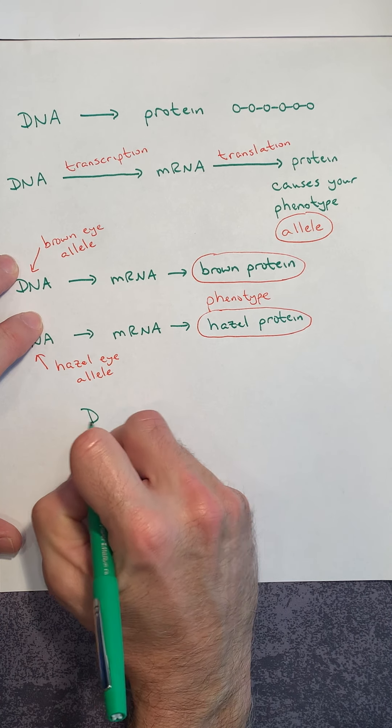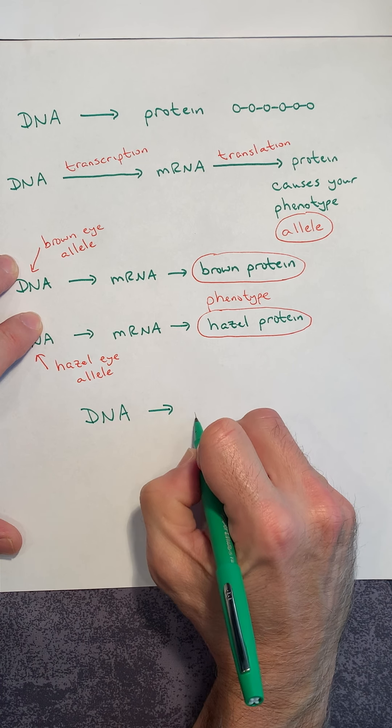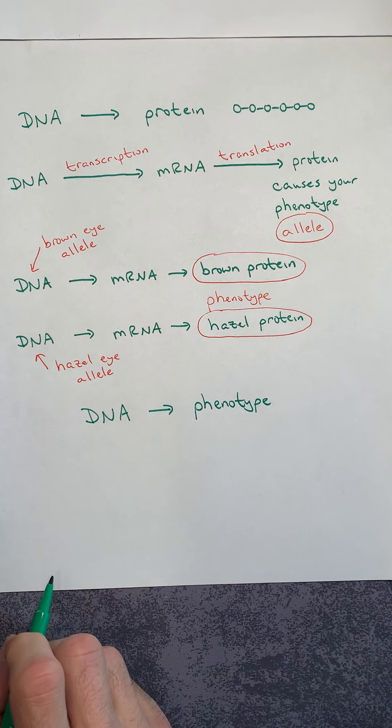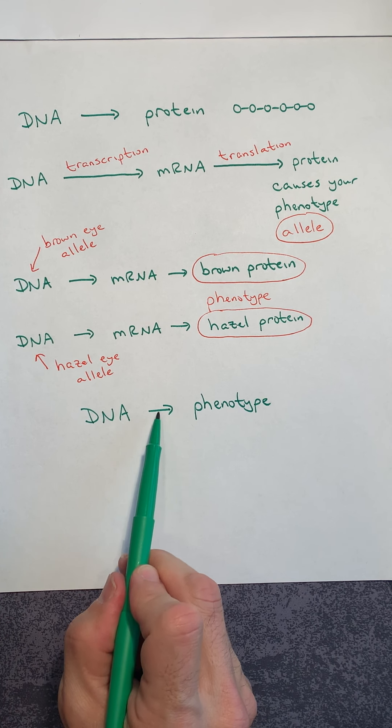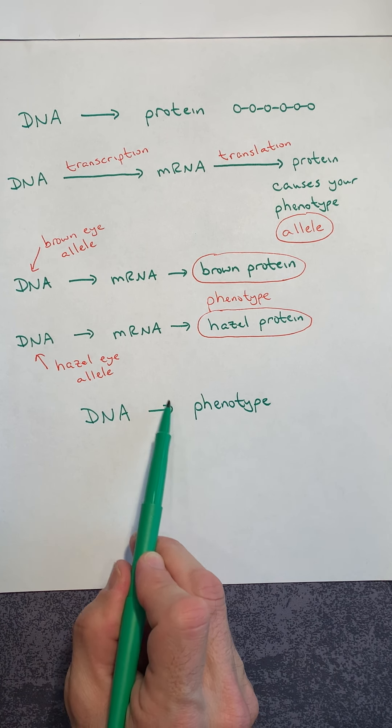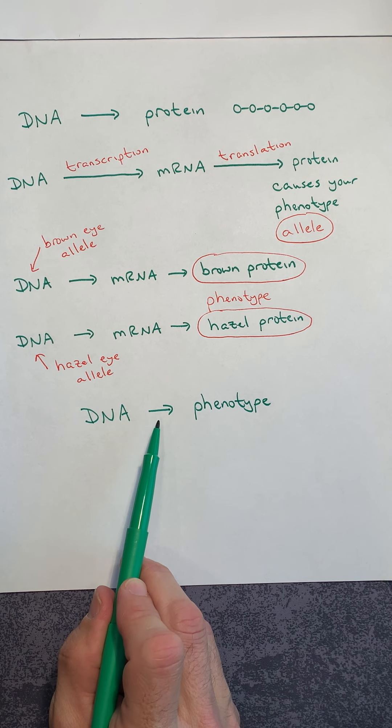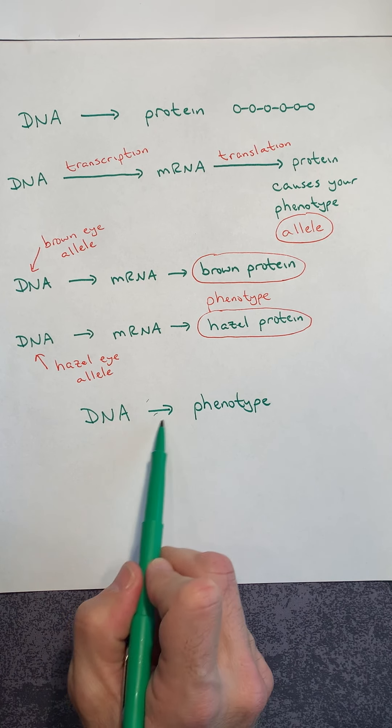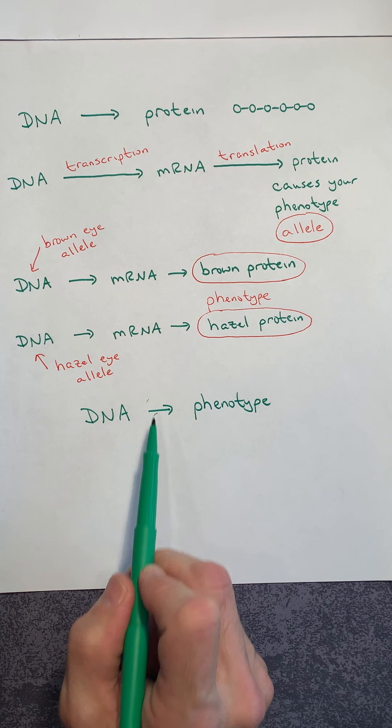So ultimately, DNA causes your phenotype. But you know now, in that little arrow is transcription, translation, messenger RNA, transfer RNA, ribosomes, amino acid. There's a lot of chemistry that goes on in that little arrow right there.